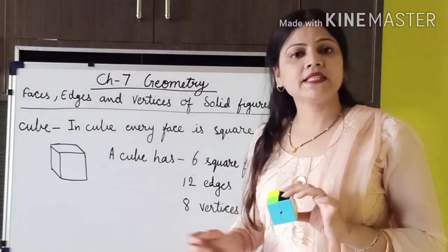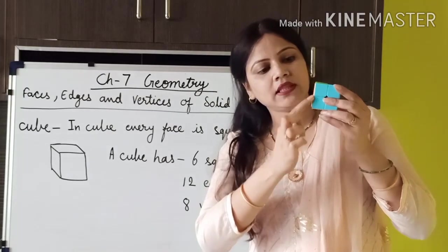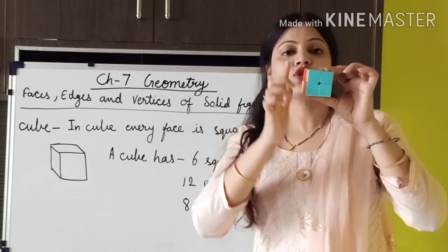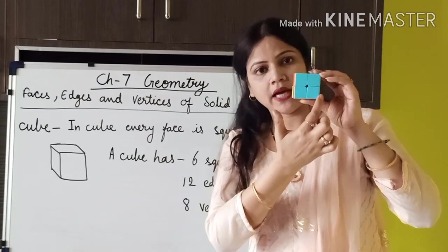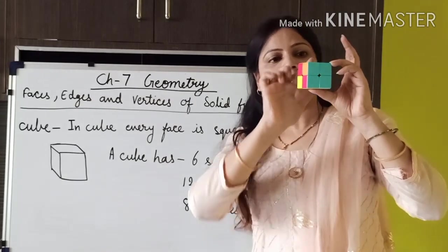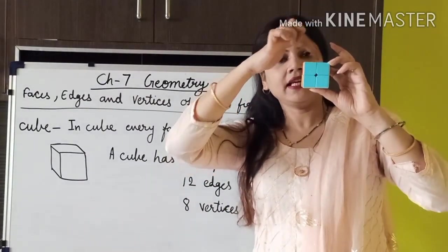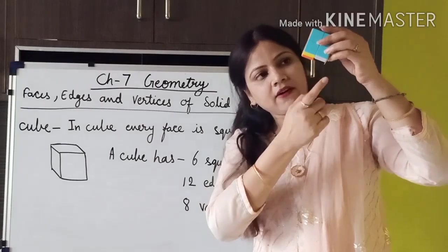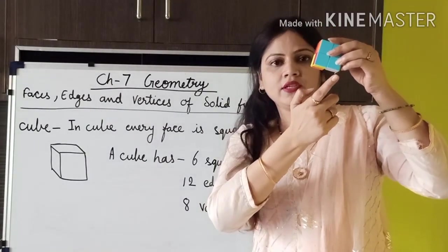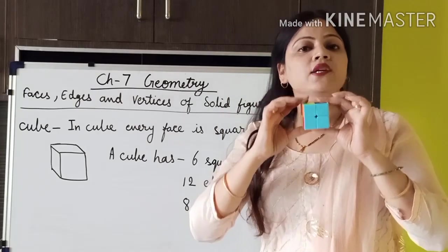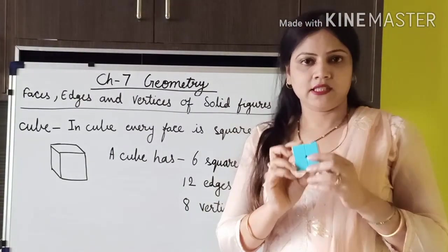A cube has 12 edges. Edges means sides. Counting: one, two, three, four, five, six, seven, eight, nine, ten, eleven, twelve. So a cube has 12 edges — 12 sides.